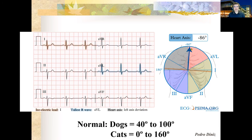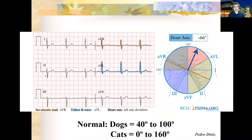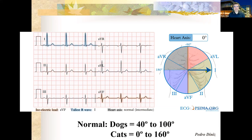Because deviation toward the left side also moves away from Lead II, a negative QRS in Lead II can occur in either direction. That's why it's important to identify which quadrant the axis is in — between Lead I and AVF, AVF and 180°, 180° to -90°, or -90° to 0°. We'll go over the normal values for dogs and cats next.